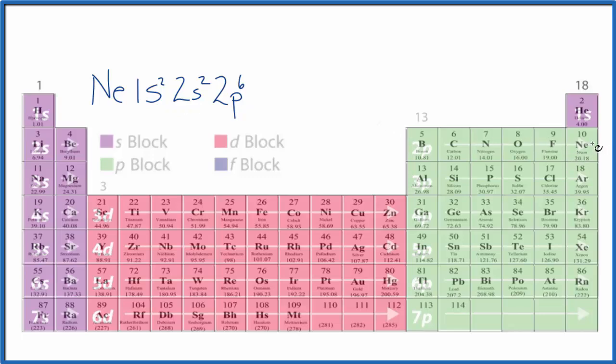From neon, we go over to number 11, sodium. For sodium, we're in the third energy level, so we're going to start out again with 3s1. Magnesium with atomic number 12 has 12 protons, 12 electrons. So now we have 3s2 for magnesium.